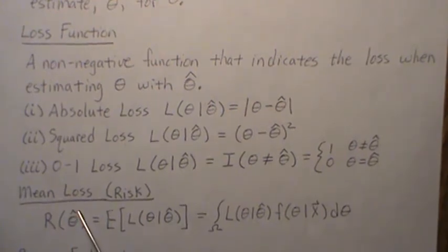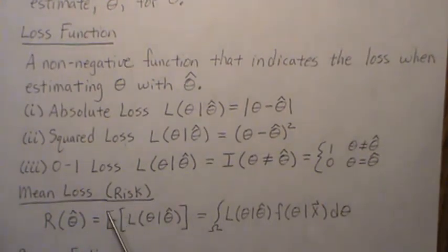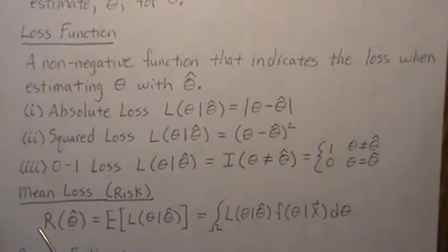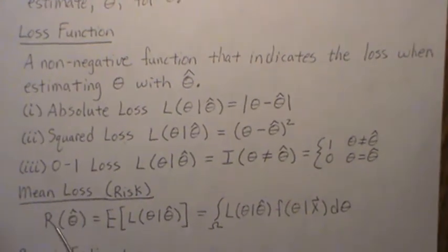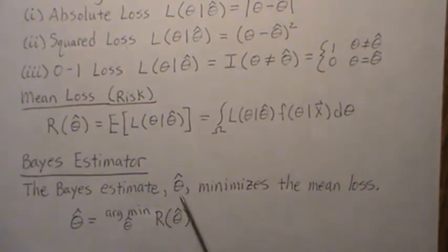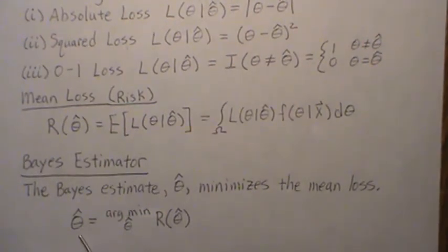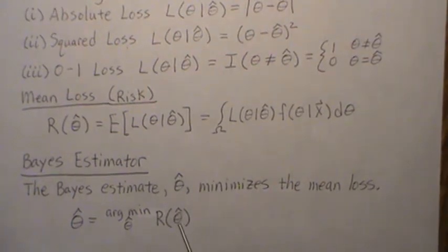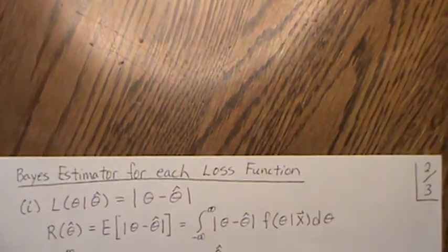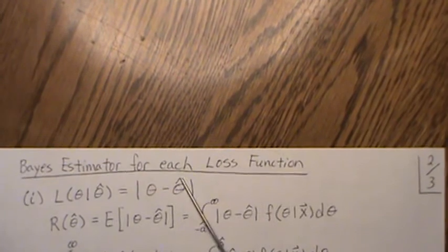Different fields call it different things — risk, cost, and so on — but here we'll call it mean loss, and we denote it by r of theta hat. The Bayes estimator is the estimate theta hat which minimizes the mean loss. So theta hat is the argmin of the risk function: it finds the theta hat that achieves the minimum.